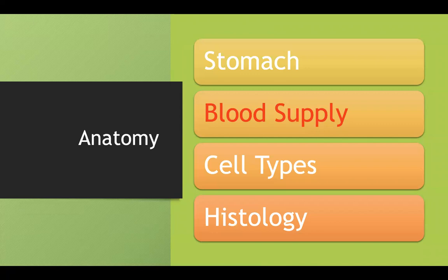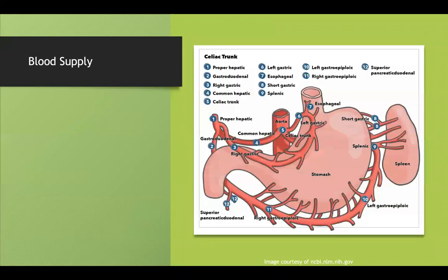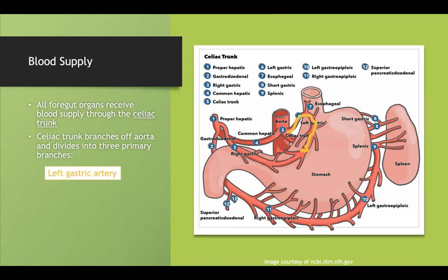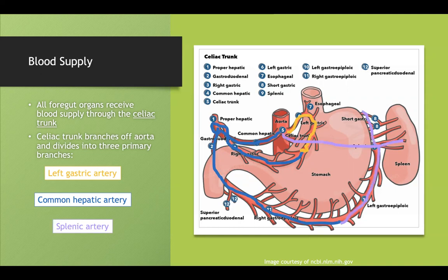Now I'd like to talk about blood supply — I think this is high yield. All four foregut organs receive blood supply through the celiac trunk, which is comprised of three major vessels: the left gastric artery, the common hepatic artery, and the splenic artery. The combination of these three vessels adequately supplies many regions of the stomach.